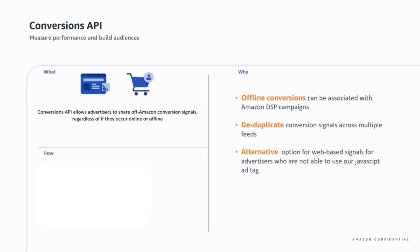Now let's dive into the Conversion API use cases. At a high level, Conversion API is a server-to-server API which allows advertisers to share off-Amazon conversion signals, regardless of whether they occur online or offline. There are three use cases, not limited to, that I wanted to share with you today.